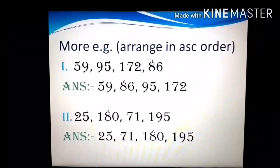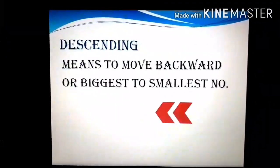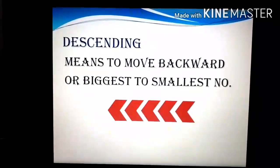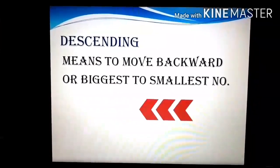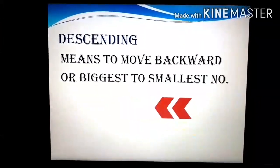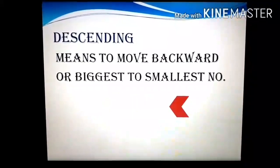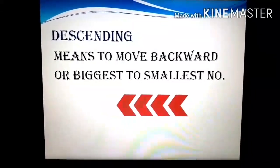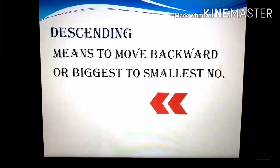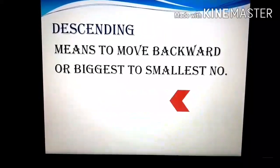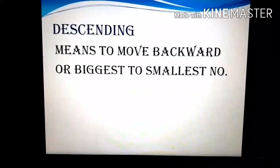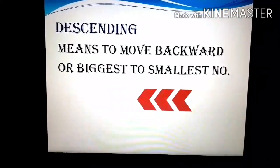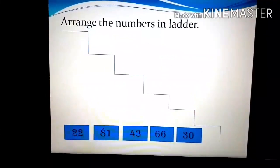Now we will move to descending order. Descending order means to move backward, means from biggest to smallest number. In the picture you can see the arrows are going backward, so the numbers also should be from biggest to smallest number.